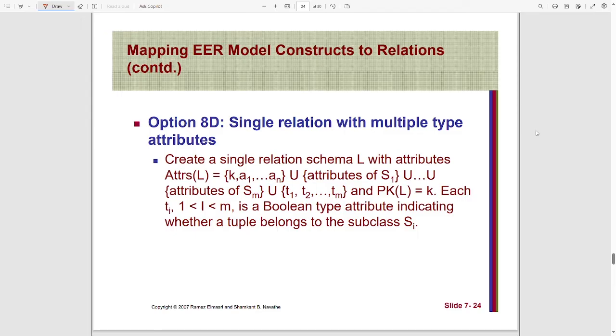How many? The number of type attributes will be the same as the number of subclasses. If there are m number of subclasses, there will be m number of type attributes. Here, the type attributes are boolean type attributes where the value can be either true or false, which means zero or one.